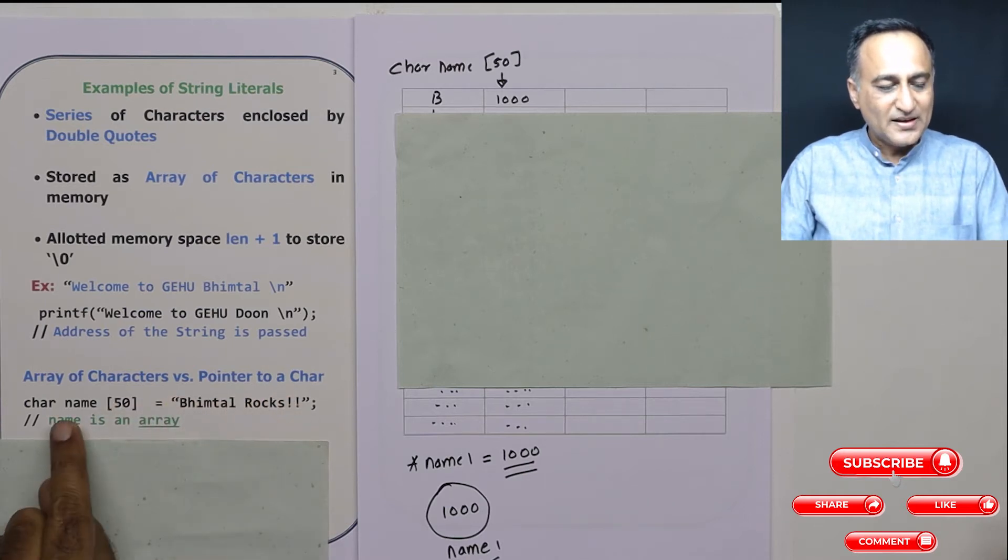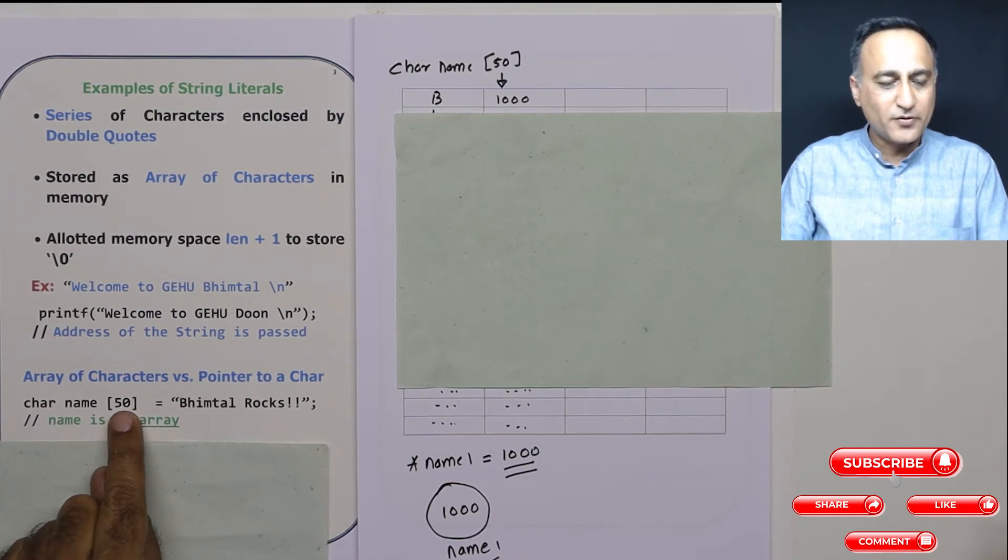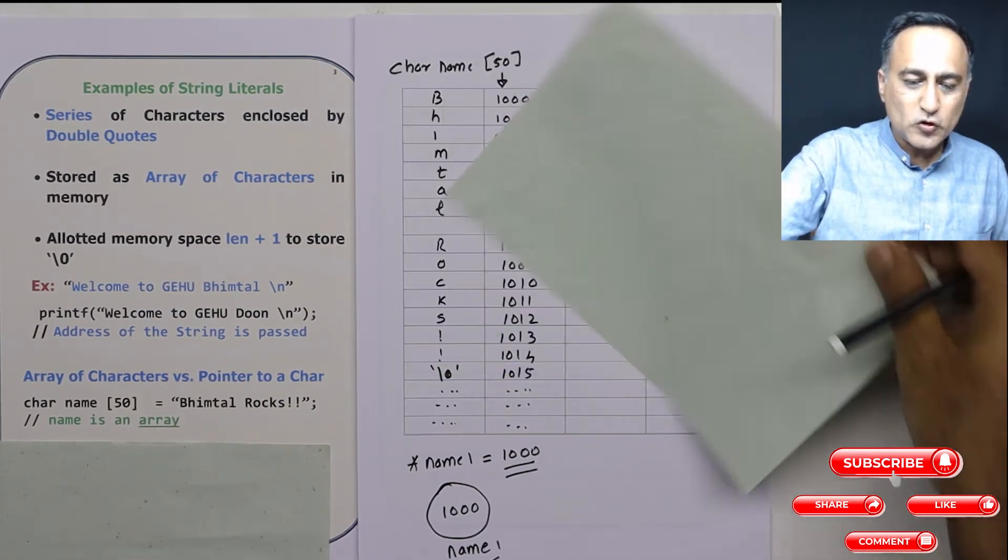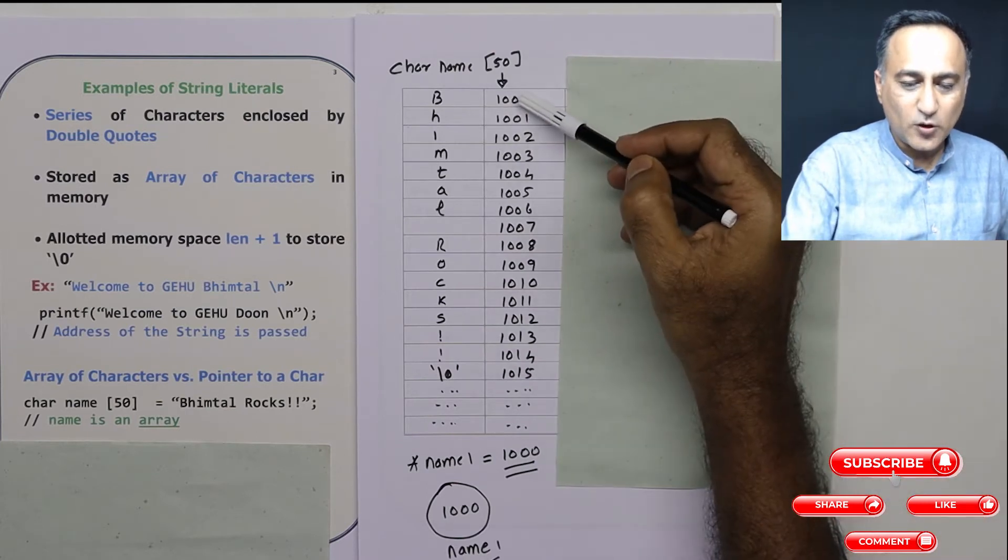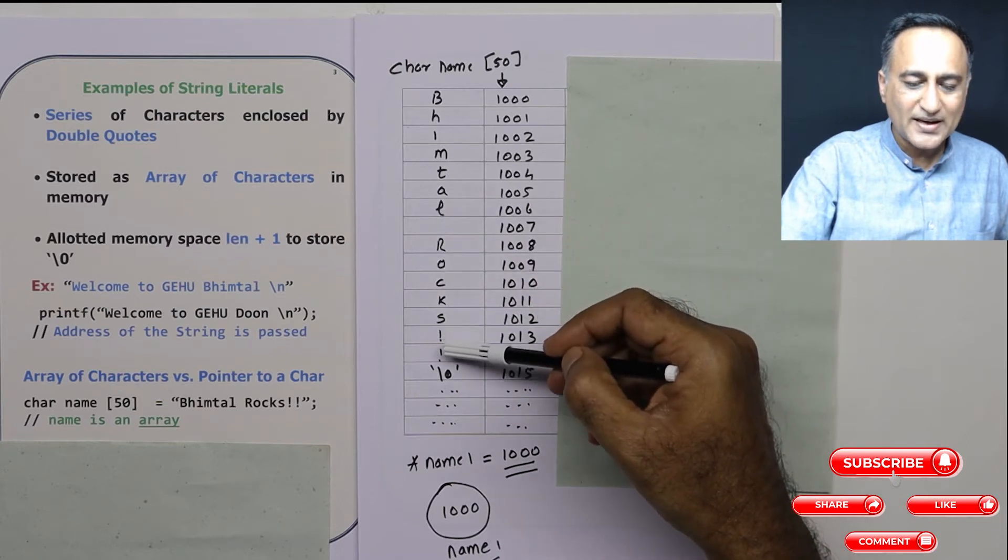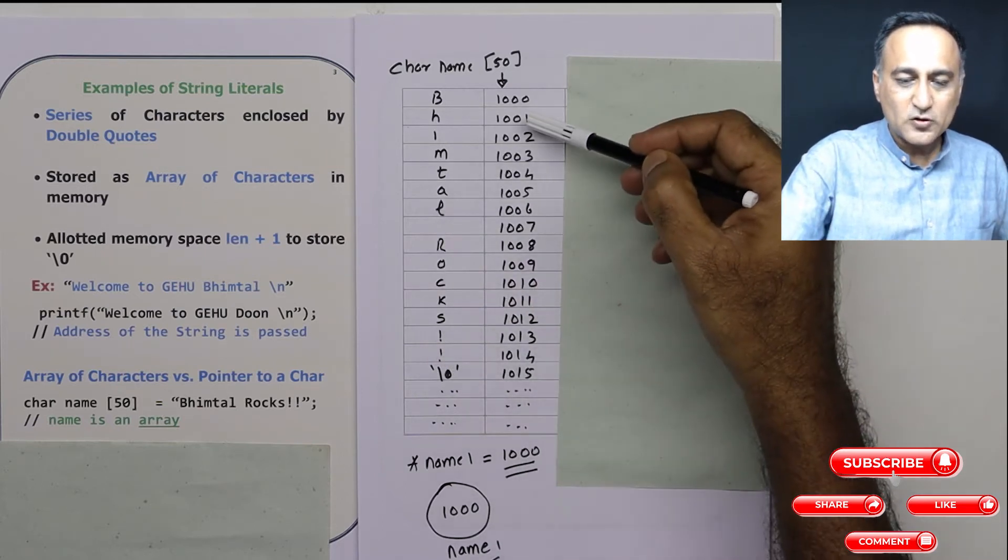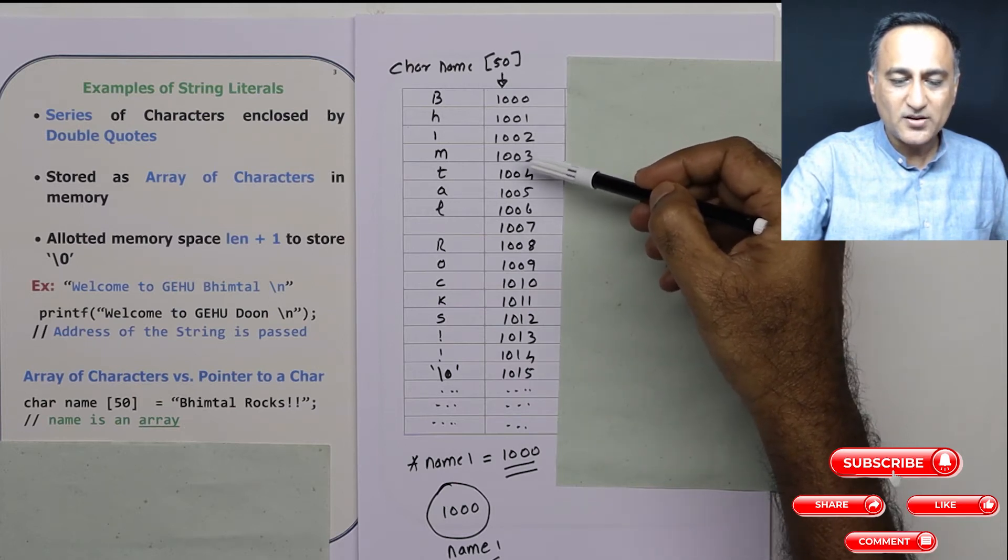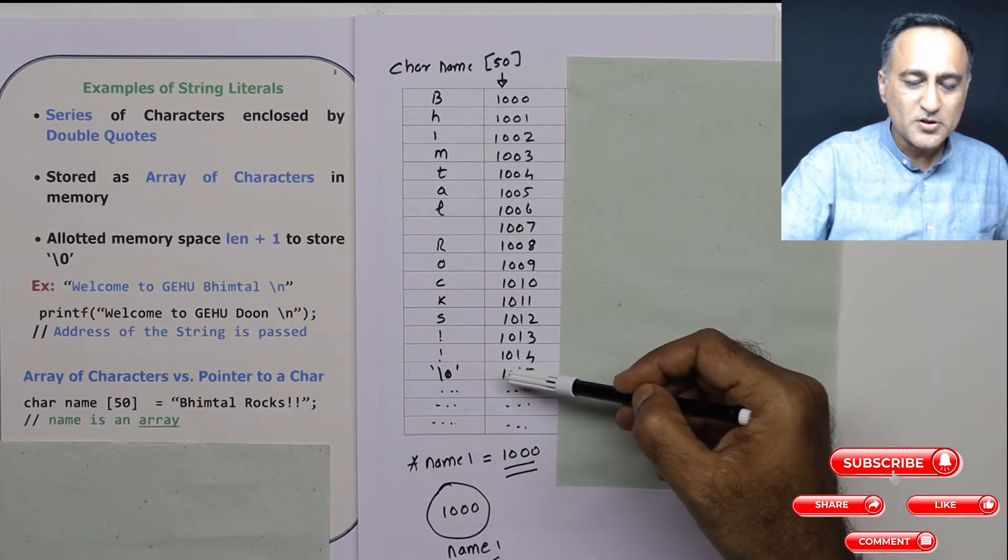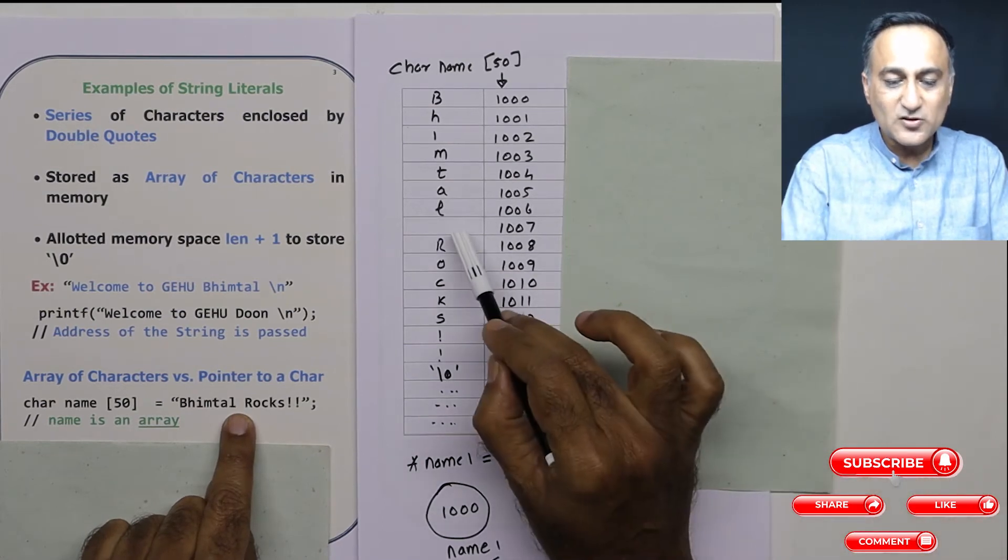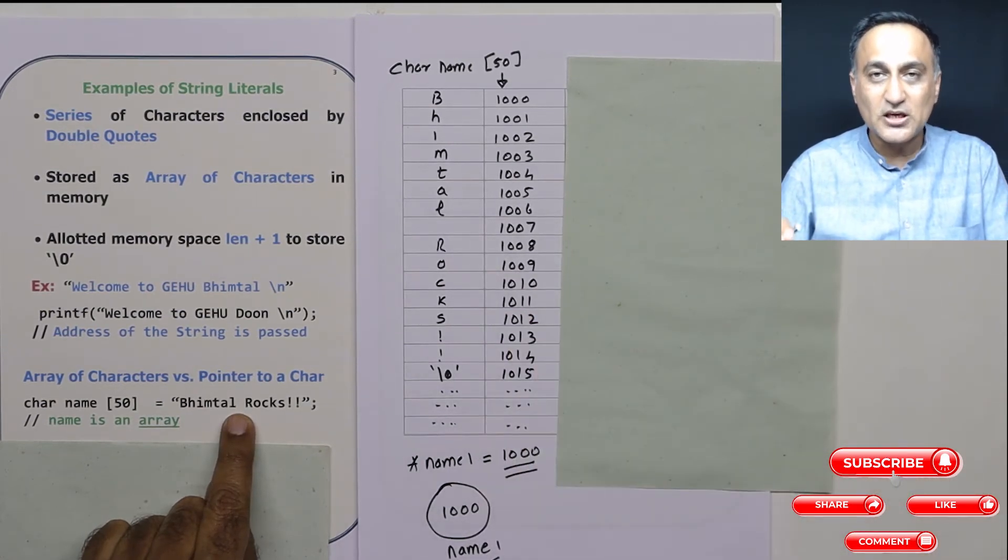Here, name is an array of characters of maximum width 50. I have given it the message "Bhimtal rocks". Assume that starting from the 1000th location, B is stored at 1000 and all the way it keeps storing one character per byte. So h is going to be at 1001, i is going to be at 1002, m is going to be at 1003, all the way till the null character which is going to be stored at 1015.